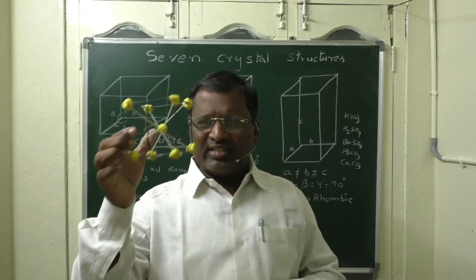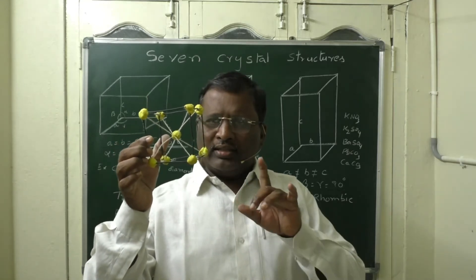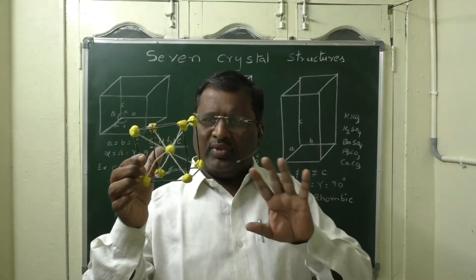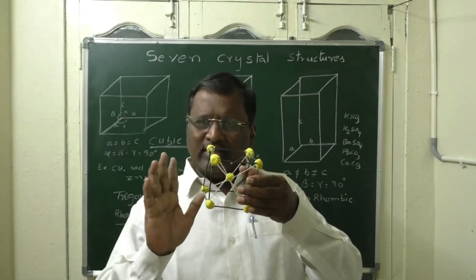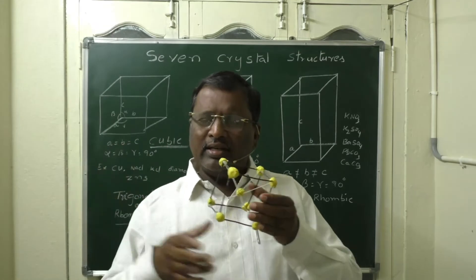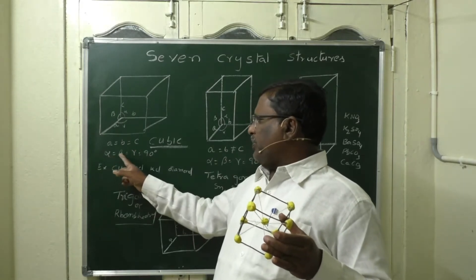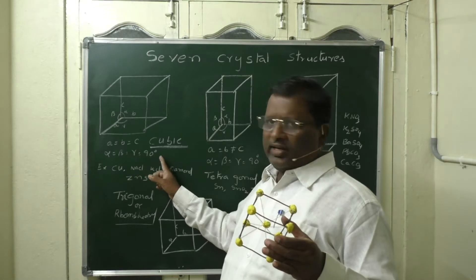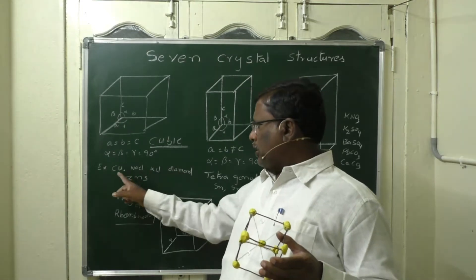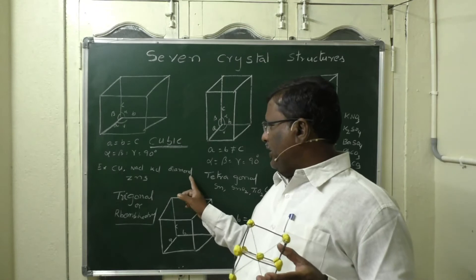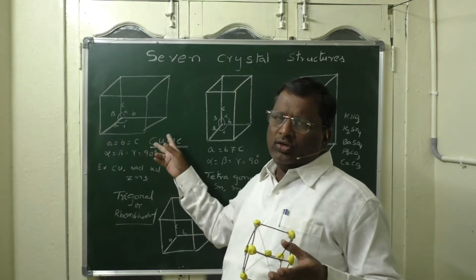In this cubic structure, all three sides — length, width, and height — are the same: a = b = c, and the angle between any two sides is 90 degrees, so alpha = beta = gamma = 90°. Examples of cubic structures include copper, sodium chloride, potassium chloride, diamond, and zinc sulphide.